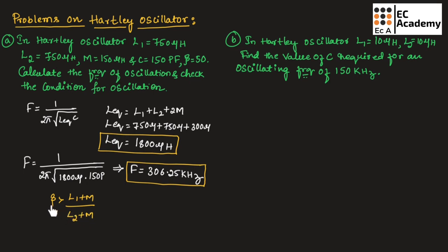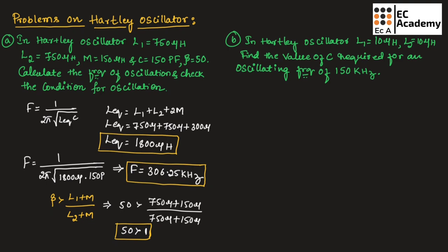If mutual inductance is not given, gain should be greater than L1 / L2. Substituting the values of L1, L2, and M, we get: 50 > (750 µH + 150 µH) / (750 µH + 150 µH). Solving this, we get 50 > 1. So it satisfies the condition of oscillation. Since 50 is greater than 1, we can say it satisfies the condition of oscillation. Let us consider the second problem.